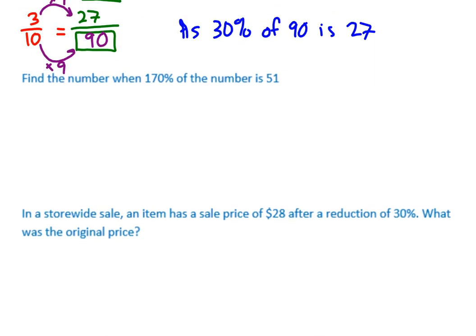So find the number when 170% of the number is 51. So 170%, you can still write it as a percent. It's just 170 over 100. It is 51 over our mystery number. And let's simplify our fraction. We divide the top and bottom by 10. We get 17 over 10 equals 51 over our mystery number.